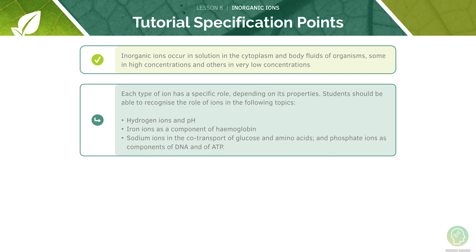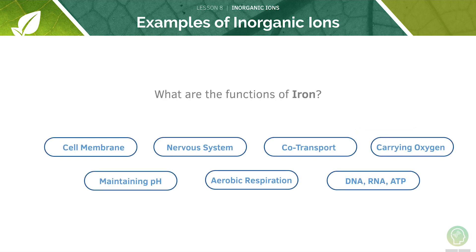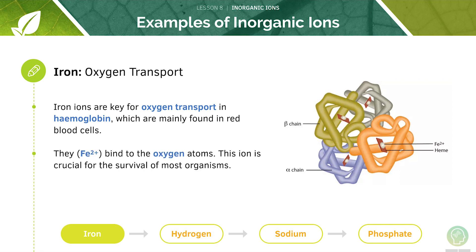Now we will focus on the different ions in the human body. There are four main inorganic ions we will be focusing on today. Can you name the functions of iron? Pause the video now to make an educated guess. Iron is used to carry oxygen. Iron ions are primarily found in red blood cells in the protein called haemoglobin. The iron ions, Fe2+, are actually the ones that bind to the oxygen atoms, which makes it crucial for the survival of most organisms.